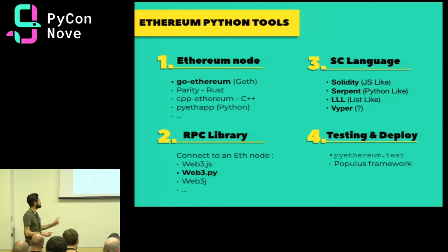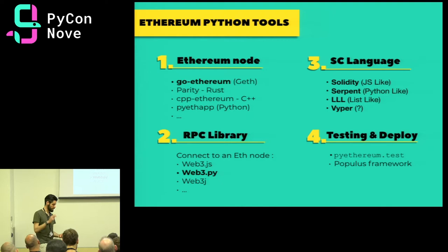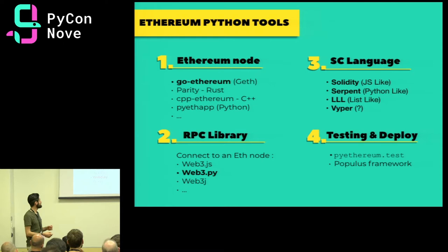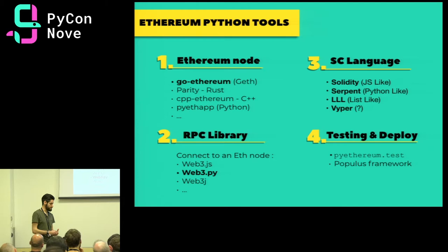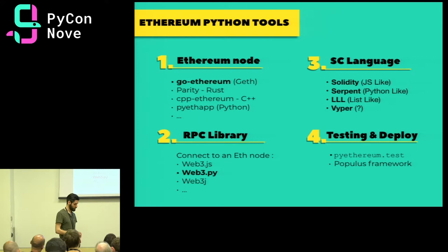The first thing you need to start developing with Ethereum is an Ethereum node — the implementation of the Ethereum protocol, including transaction management, mining, and EVM execution. There are many implementations: the most common is Go-Ethereum (geth), implemented in Go. Then there's Parity in Rust, cpp-ethereum, and PyEthereum. Sadly, PyEthereum is the only Python implementation and it's not perfect. I recommend using Go-Ethereum because it's the most popular and has everything, and you don't need to write any Go code — it's just a matter of interacting with the compiled programs.